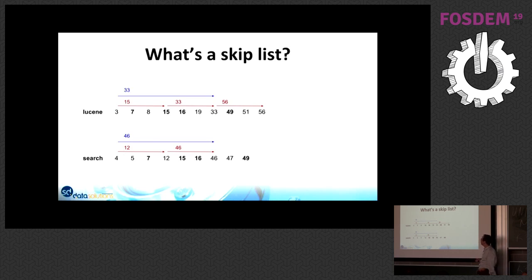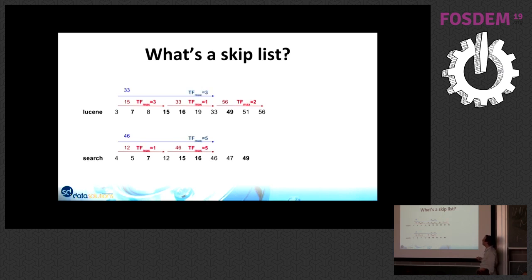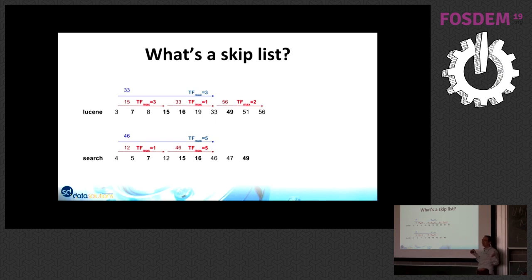The skip list is also multi-layered, so if you're here and want to jump to after document 33, there's a direct path at a higher level so you can jump even faster. The idea now is to add additional information — like term frequency — into that skip list. When collecting the top-ranking results, if your lowest competitive score is, say, 10, then any document scoring 9 would never enter the top results, so you can simply jump over those.